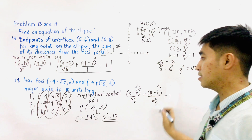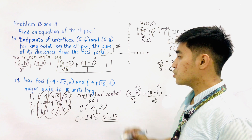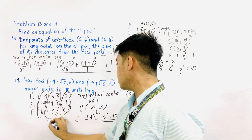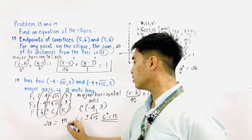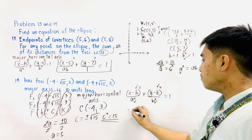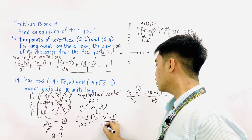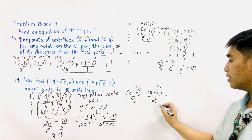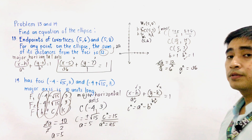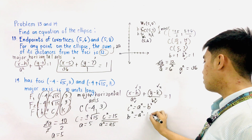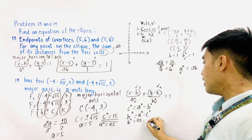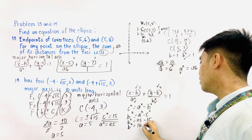The second condition says the major axis is 10 units long. The length of the major axis is always 2a, so 2a = 10, therefore a = 5 and a squared = 25. To solve for b, we use the formula c² = a² − b², so b² = a² − c² = 25 − 15 = 10. We now have a squared = 25, b squared = 10, and the center at (−4, 3).